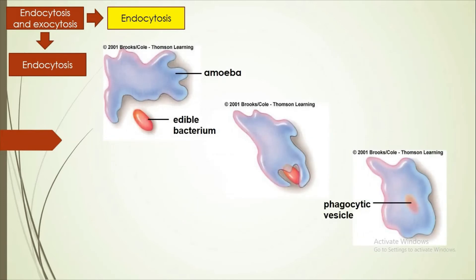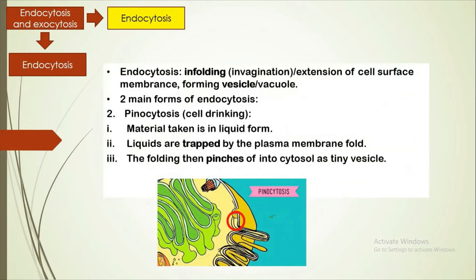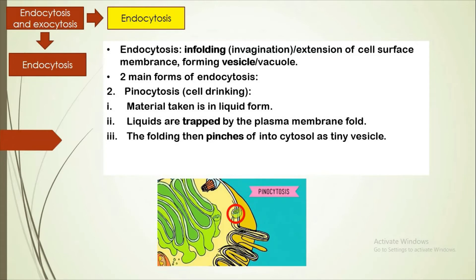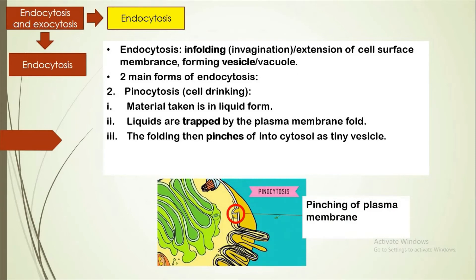As you can see here in the animation, the bacteria is being engulfed by the white blood cell by forming a phagocytic vesicle. The second form of endocytosis is pinocytosis, in which the material is taken in liquid form. Liquids are trapped by the plasma membrane folding, and finally the folding is then pinched off into the cytosol as a tiny vesicle.